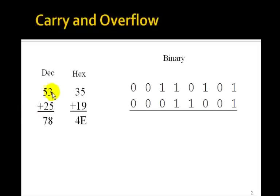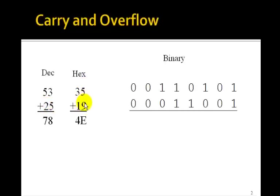Suppose we want to add decimal 53 to 25 — the answer is 78. In hex, 53 is 35, and 25 is 19. Adding 5 and 9 gives 14, which is E, and 3 plus 1 is 4, so 4E is the hex value of 78.